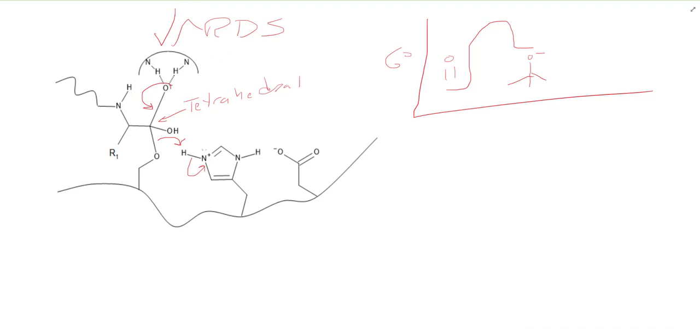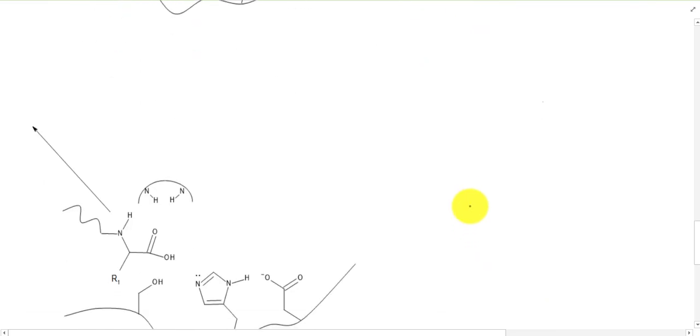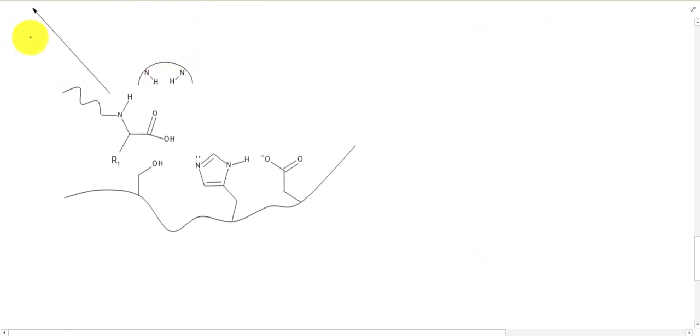So there we go. That is going to finish our mechanism. We're going to reform our carbonyl. We're then going to kick off our serine and grab a hydrogen on the way. So to finish the mechanism, now we have released our product two.